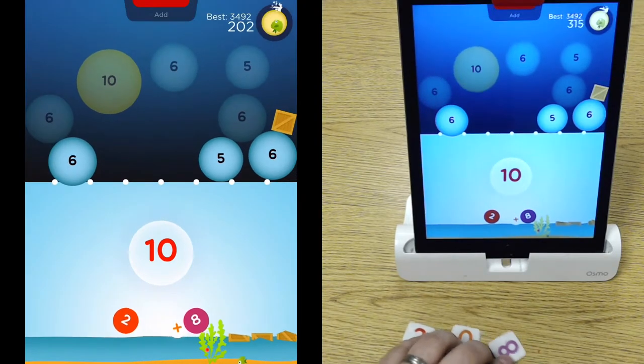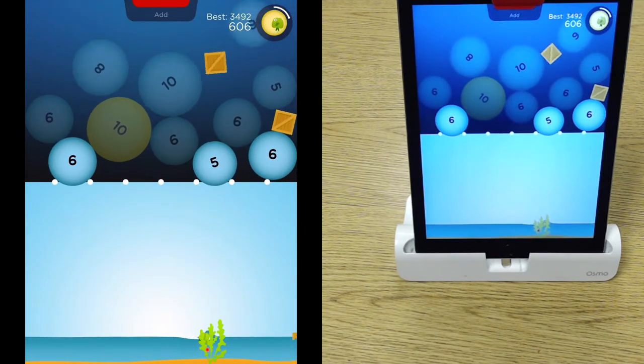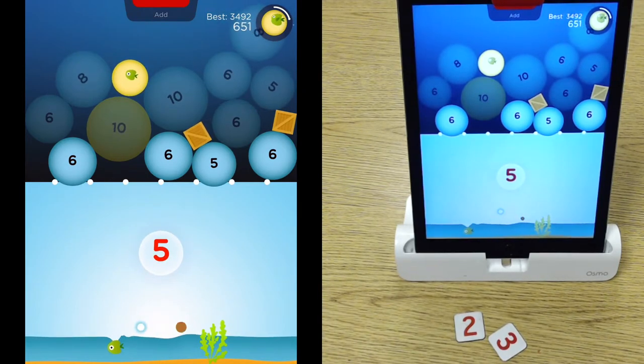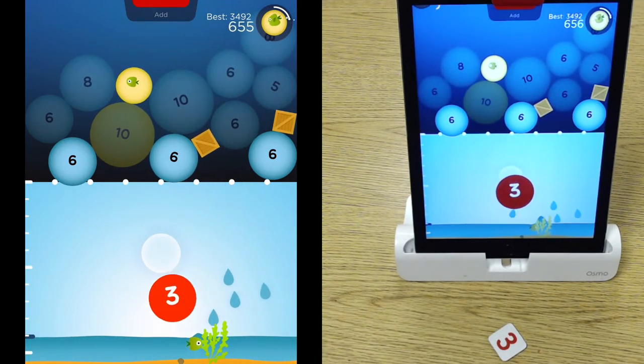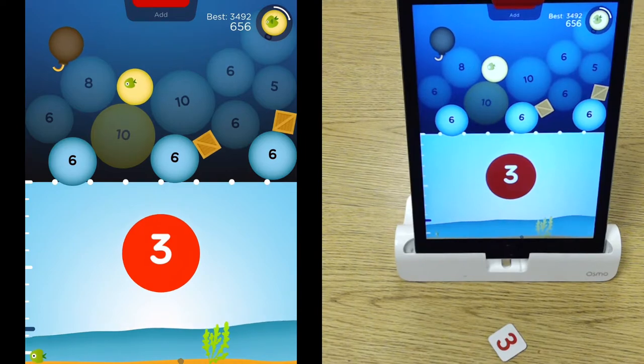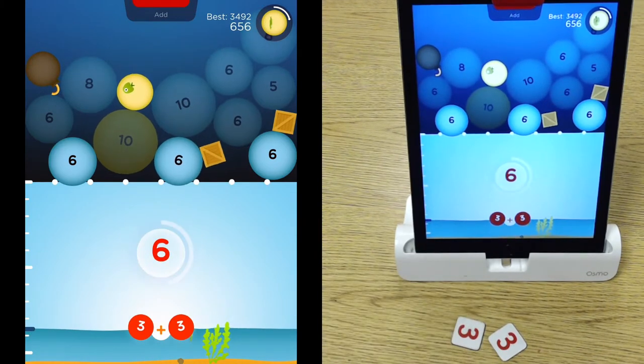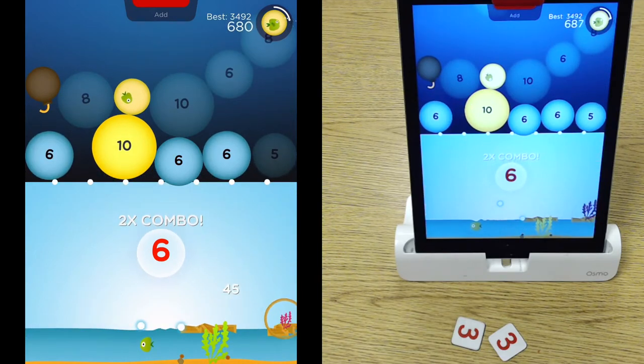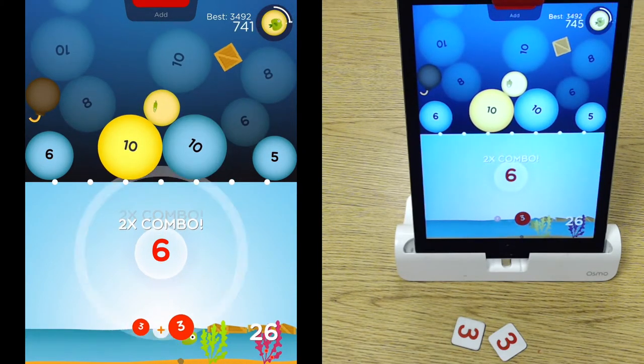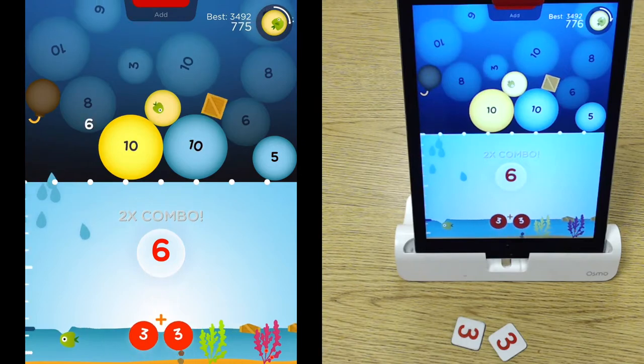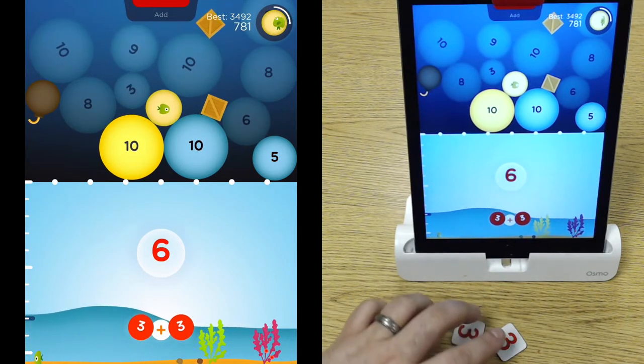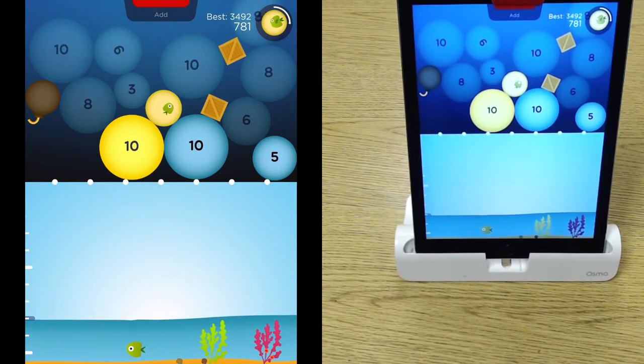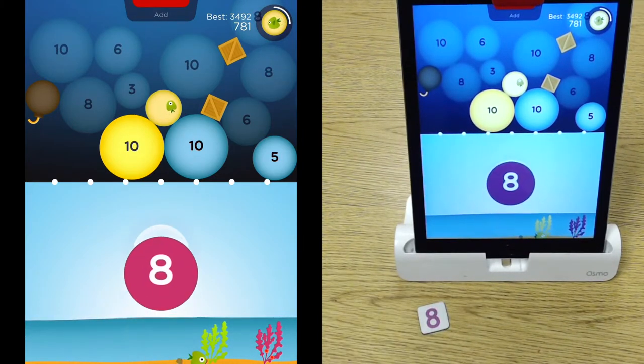I'm going to take this away. And I can do two plus three. Three plus three. And now I'm getting combos because I didn't have to move the tile very much. Eight plus two.